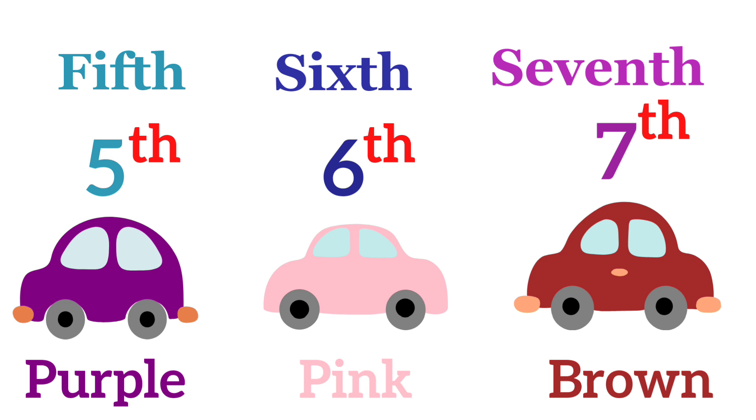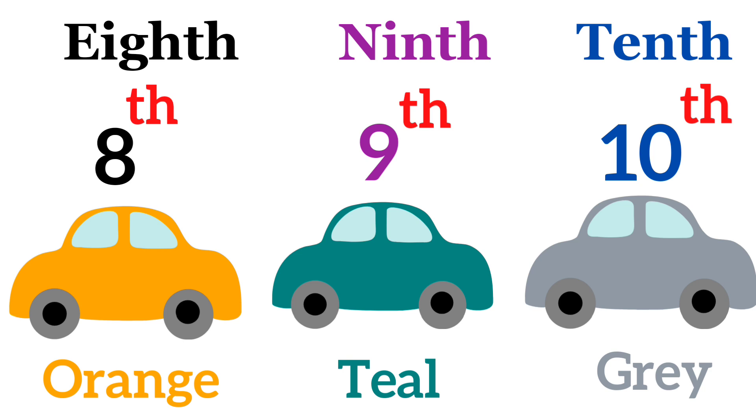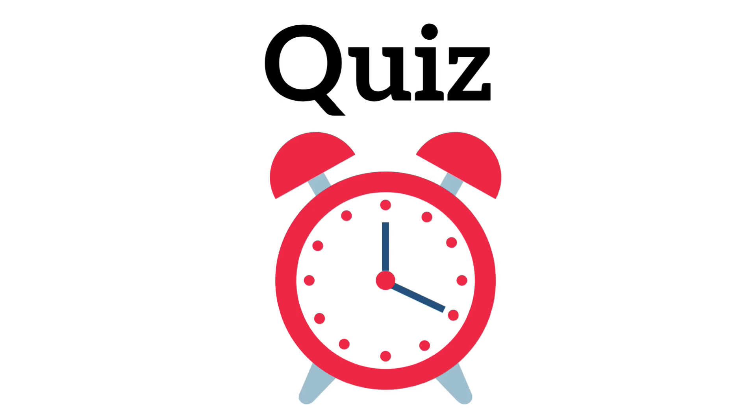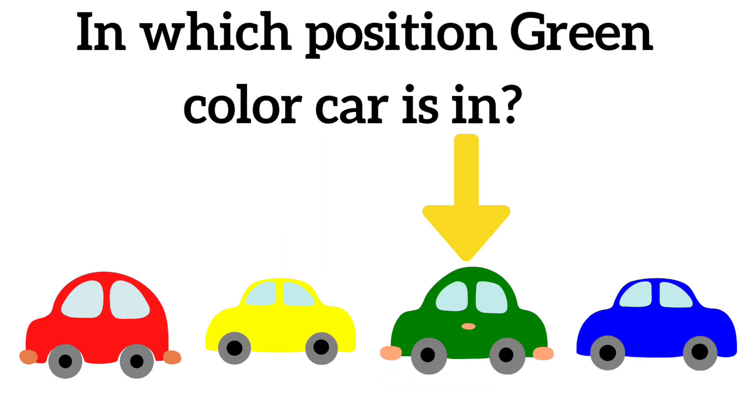Brown color car is placed in 7th position. Orange color car is placed in 8th position. Teal color car is placed in 9th position. And grey color car is placed in 10th position. So now it's quest time. Here is